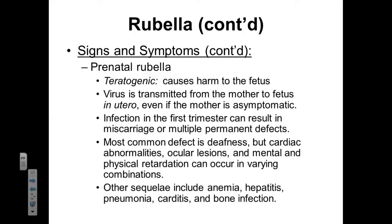This virus can go from mom to baby in utero even if mom is asymptomatic. Infection during the first trimester can oftentimes result in miscarriage. If the infection happens later in the second trimester, there is a dramatically reduced chance of miscarriage, but still a significant chance of birth defects. In the third trimester, the risk to baby has been correspondingly decreased. The most common birth defects associated with prenatal rubella include deafness, cardiac abnormalities, ocular lesions, and mental and physical retardation. Other complications include anemia, hepatitis, pneumonia, carditis, and bone infections.